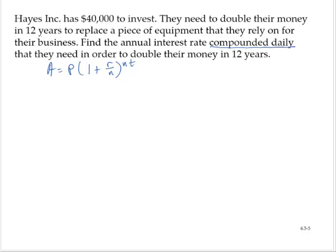Now let's read through the problem and make appropriate substitutions. Hayes Incorporated has $40,000 to invest. That's how much they're starting with, so that's the P value, $40,000.